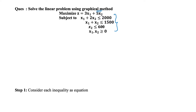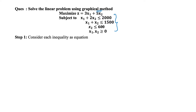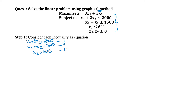Our first step is to consider the inequalities as equations. Here I have three inequalities. The first is x1 plus 2x2 equals 2000. Next is x1 plus x2 equals 1500. And the third is x2 equals 600. So I converted all inequalities into equations, giving me three line equations.